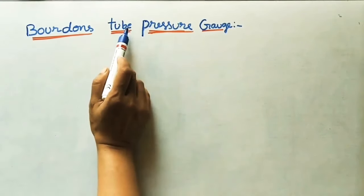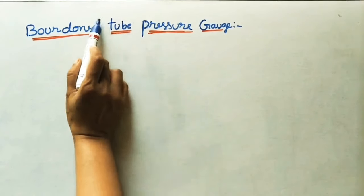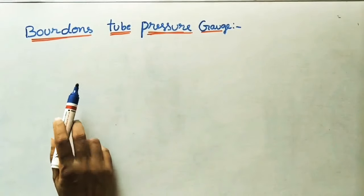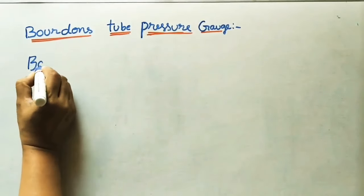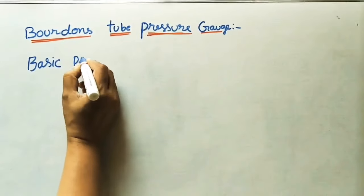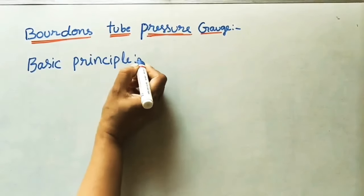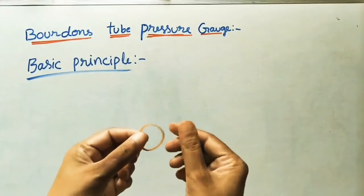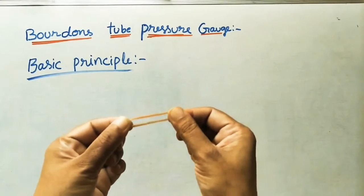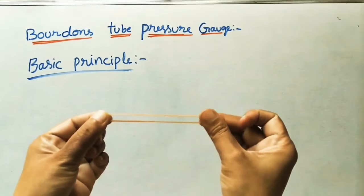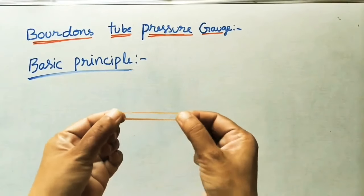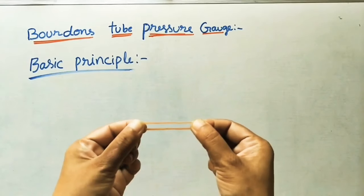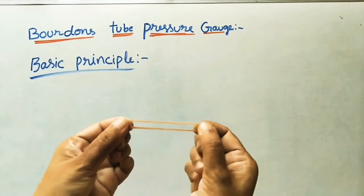In the Bourdon tube pressure gauge, one elastic tube is used — that is why it is called the Bourdon tube pressure gauge. On what principle does it work? The Bourdon tube has an elastic property. For example, when force is applied to a rubber material, because of elasticity it will elongate or deflect. If more pressure is applied, the deflection is more; if less pressure is applied, the deflection is less.